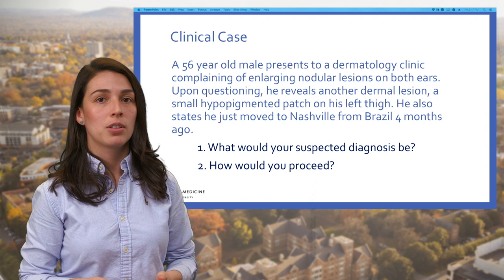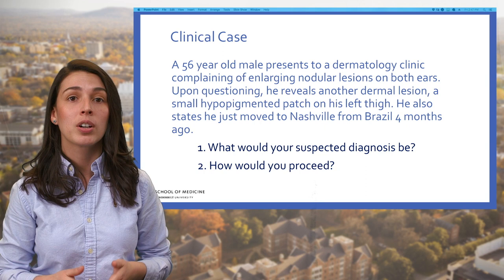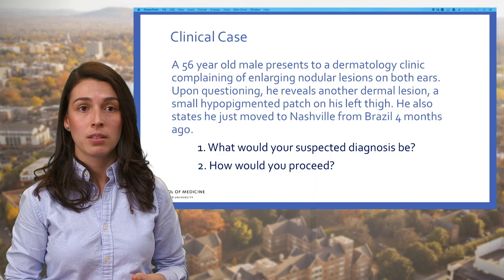It's time for a clinical case. A 56-year-old male presents to a dermatology clinic complaining of enlarging nodular lesions on both ears. Upon questioning, he reveals another dermal lesion — a small hypopigmented patch on his left thigh. He also states that he just moved to Nashville from Brazil four months ago. You have two questions: what is your suspected diagnosis and how would you proceed?